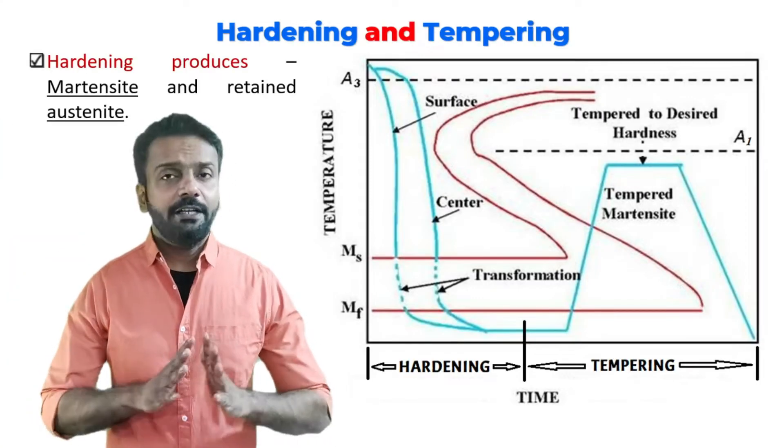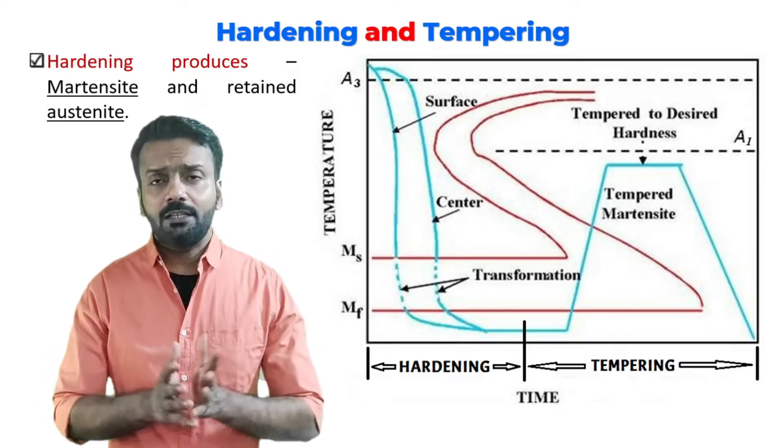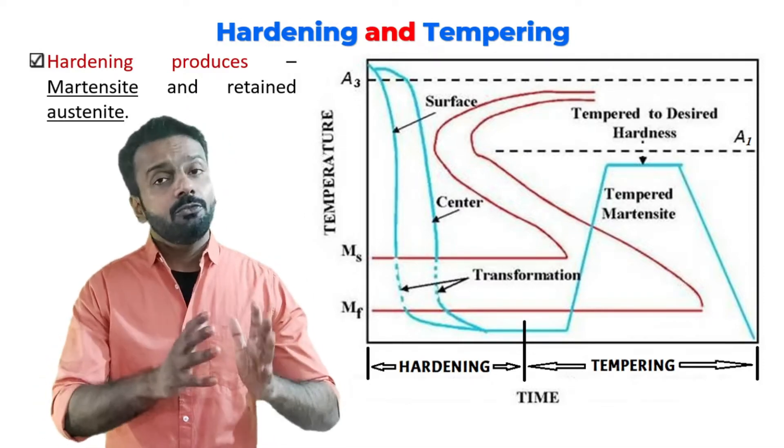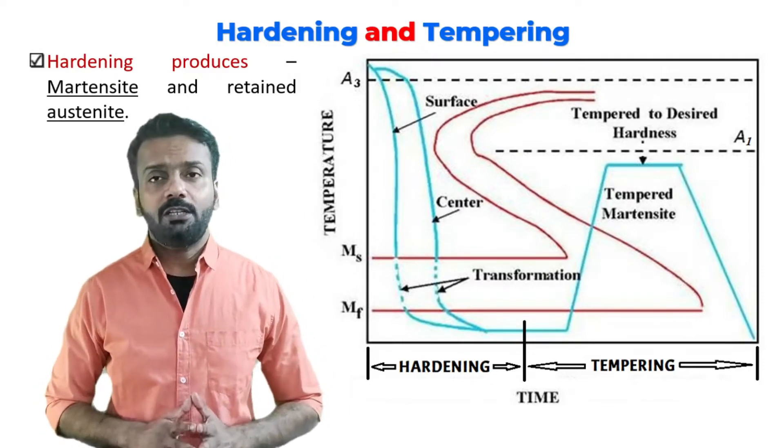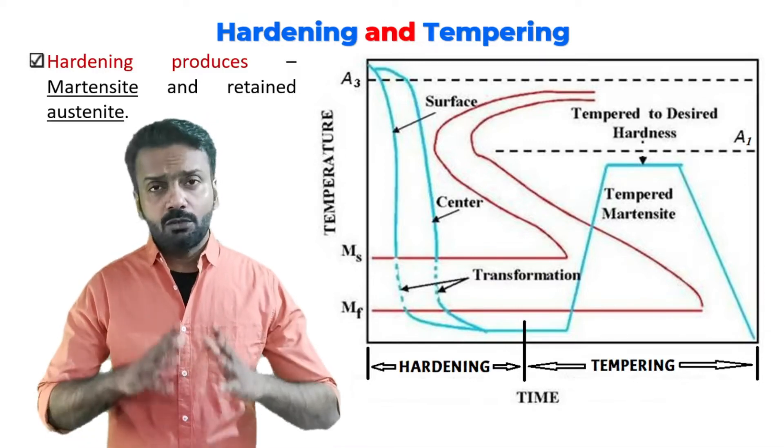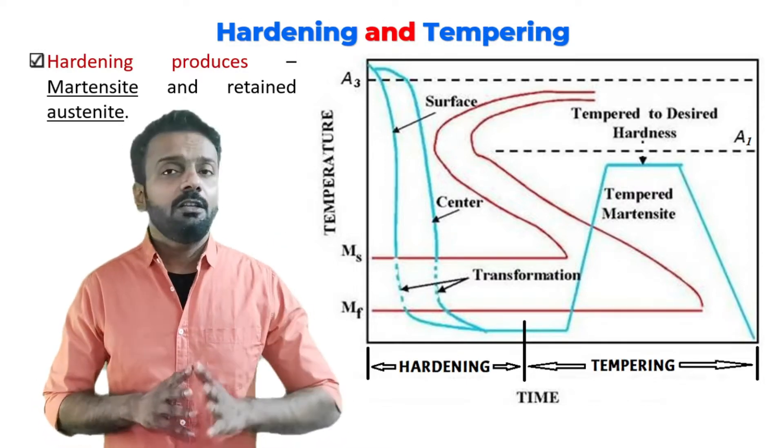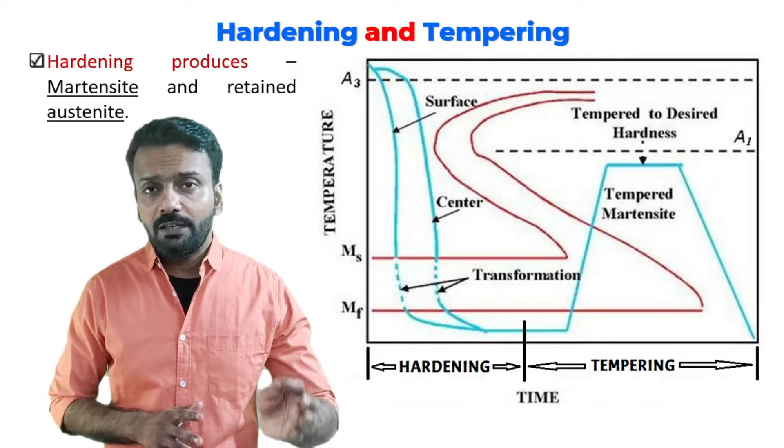In hardening heat treatment, we are heating the material to the austenitic range - we are completely austenitizing the material. From there, we are quenching the material. Quenching can be done in water or oil. The only thing we have to remember is that we have to cool the material based on the critical cooling rate.